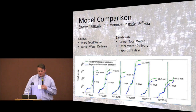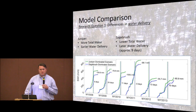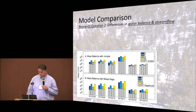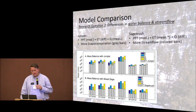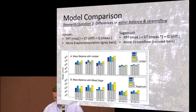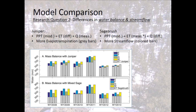What do those differences in snow distribution mean for water delivery? Looking at surface water input — water available for infiltration — there is more water available under the juniper condition, but the availability of that water is slightly delayed for the sagebrush scenario. Looking at the water balance, the bars in part A show the juniper condition and part B shows the sagebrush condition — a mixed system including mountain big sagebrush and low sagebrush.